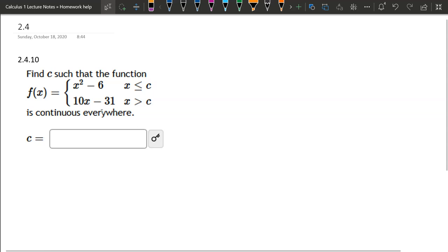In this step function, we have to decide what number c makes this function continuous everywhere. If we look at the first piece, when x is less than or equal to this number, we have a polynomial which is automatically continuous.